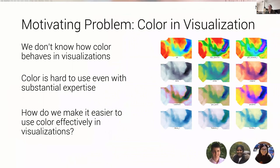Two of the biggest things that make color encoding hard are that we don't have good models for mapping our color differences to data differences. And even with the models we do have, using color well currently requires substantial design expertise. So in collaboration with several students and researchers, we're trying to better model what it means to use color well.